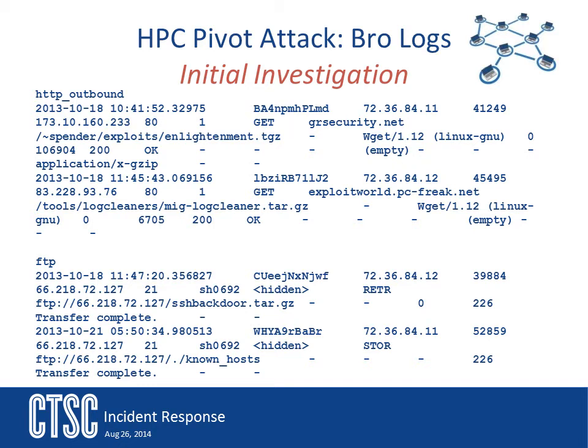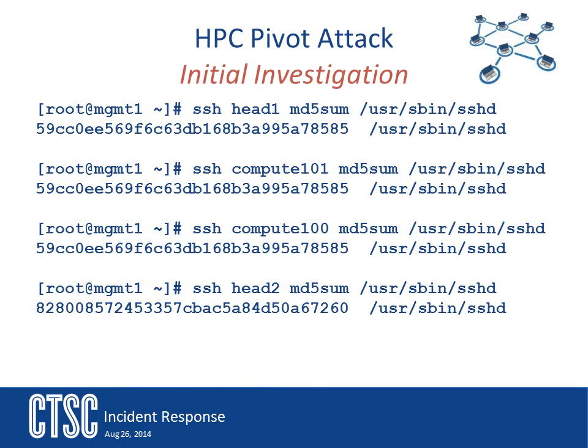The response team had the admins check the MD5 checksums from some known good systems — first on the restarted head node, and then on two good compute systems. These systems used the plain vanilla SSH that came with their image. All of the SSH MD5s were the same, except for the second head node which had not been restarted. This showed that indeed the SSH file had been replaced by some other file.